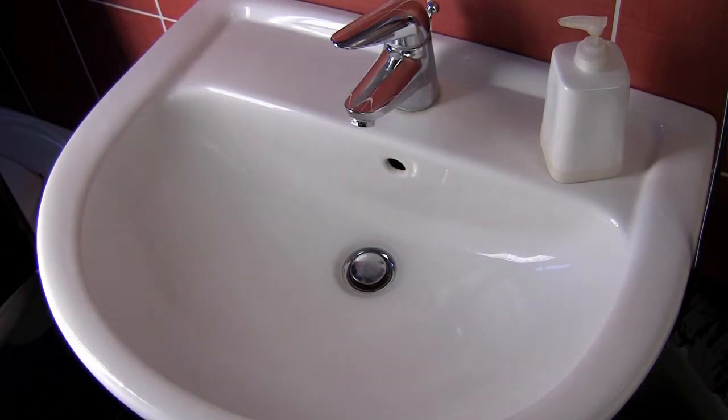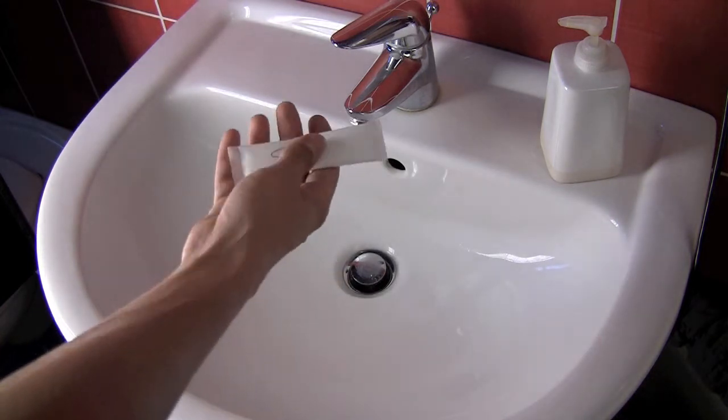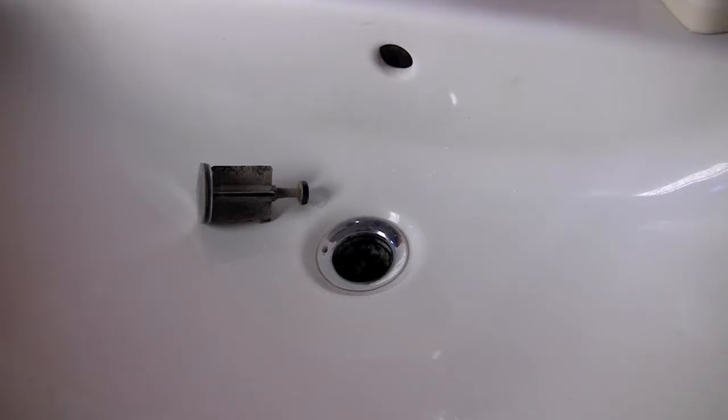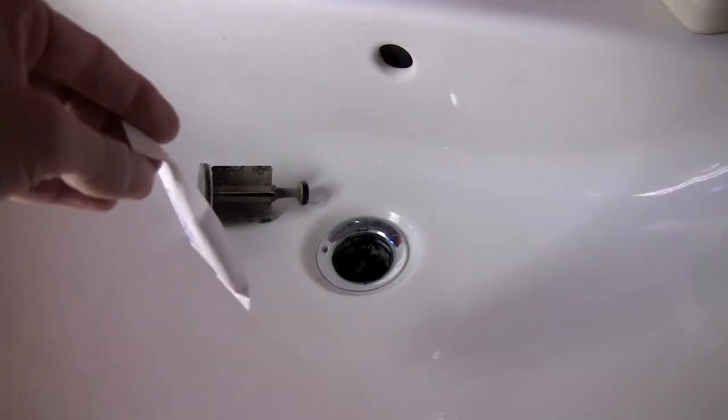We're going to mix about two packages of baking powder and about four tablespoons of vinegar, and we're going to clean up the drain so that the water flows smoothly out.